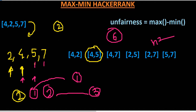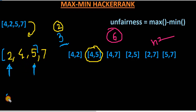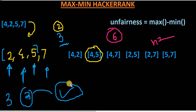For k equal to 3 on the sorted array, we take the first element as the leftmost — always the smallest — and the element at index i plus k minus 1 as the rightmost. We are essentially using two pointers that move forward together. Comparing 2 and 5 gives 3; comparing 4 and 7 gives 3. So the minimum unfairness is 3.